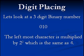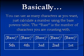When we look at a three-digit binary number, 010, the leftmost character is multiplied by the base number, which is 2, to the power of 2, which is the same as 4. You can use as many characters as you want to count, and just calculate a number using the base powers table.